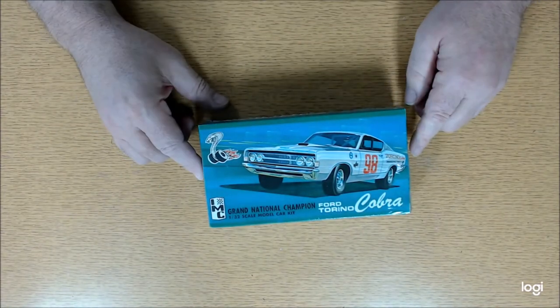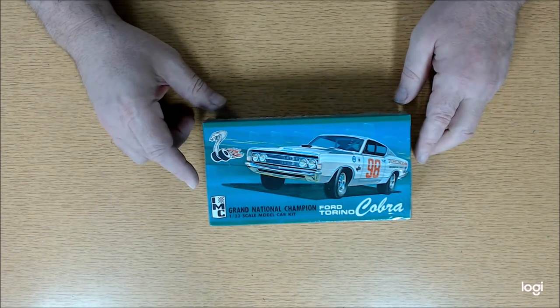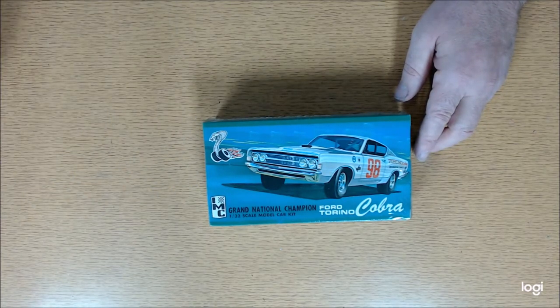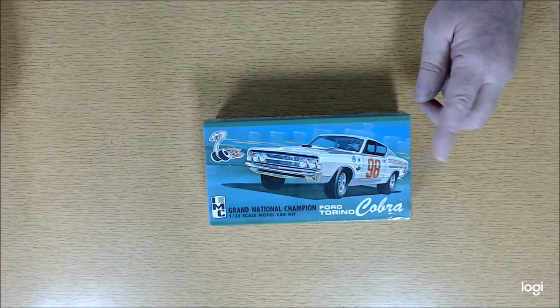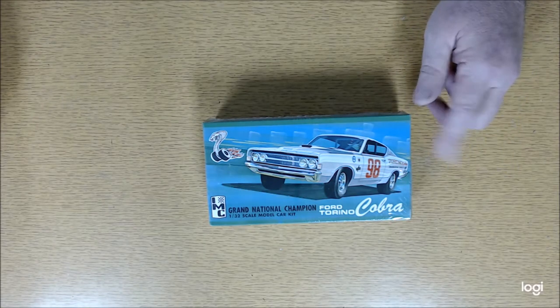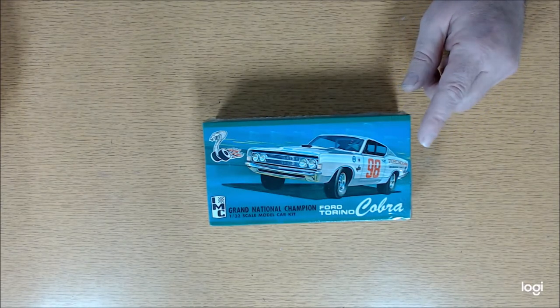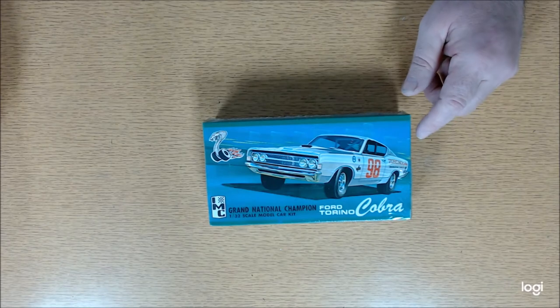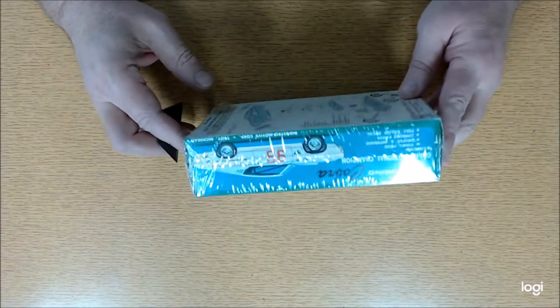This is an IMC 1/32nd scale Torino kit from about 1970, so it's about 50 years old or so. I'm not sure exactly when this company produced these. They made a series that included a 65 Impala and Old Fury. I think that 69, 68 was about the last model year they produced in this particular series. And it's a neat series.